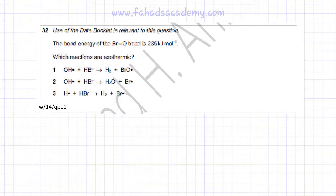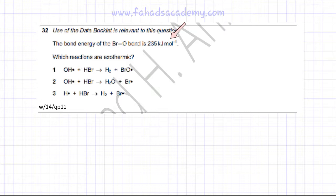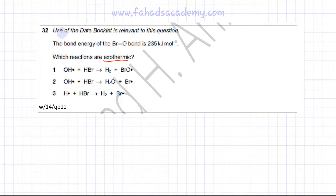This question deals with finding the enthalpy change of a reaction using bond energies. The bond energy of the BrO bond is given as 235 kilojoules per mole, and we need to determine which of the following reactions are exothermic. We are also told to use the data booklet, which contains all the other bond energies.